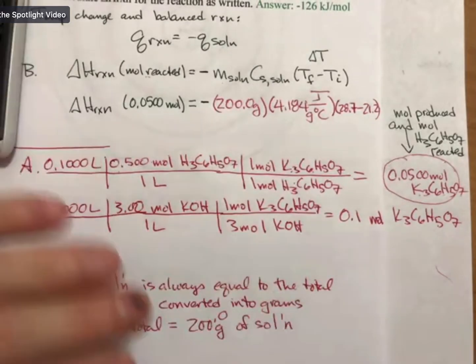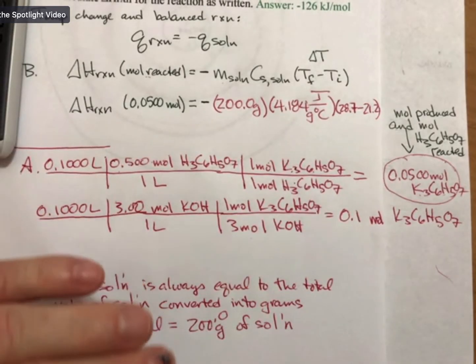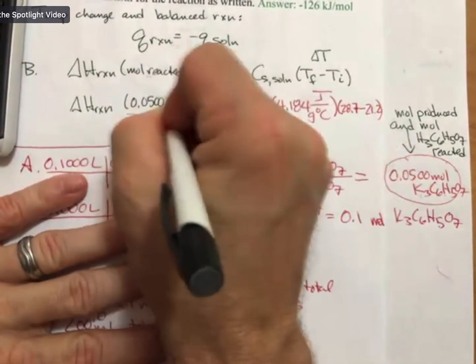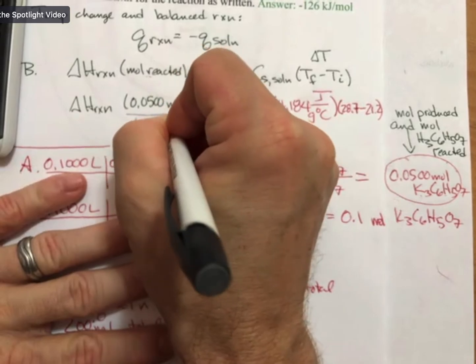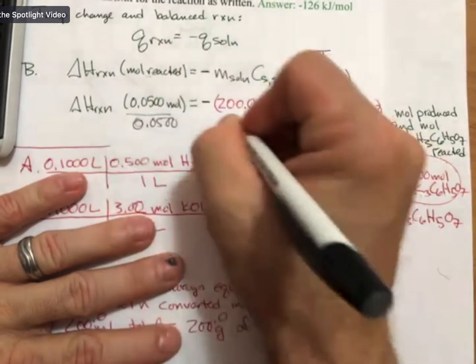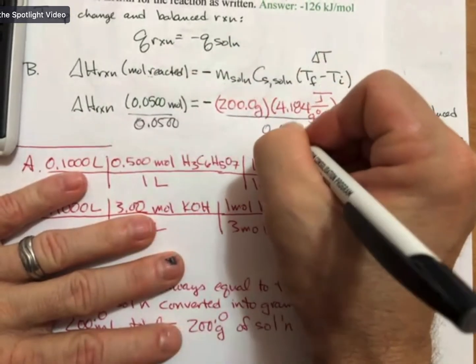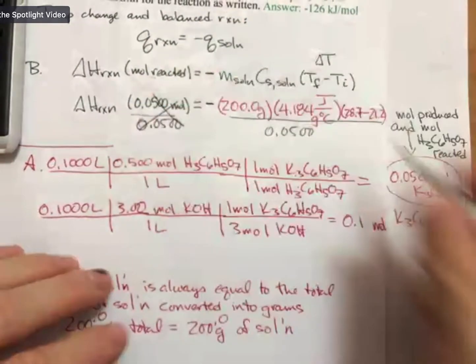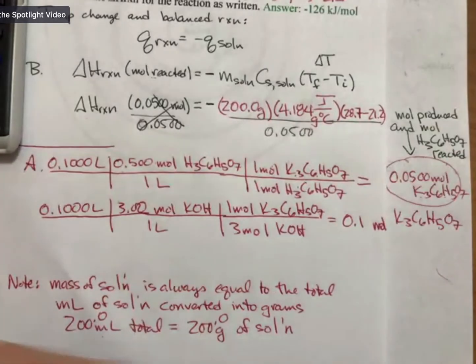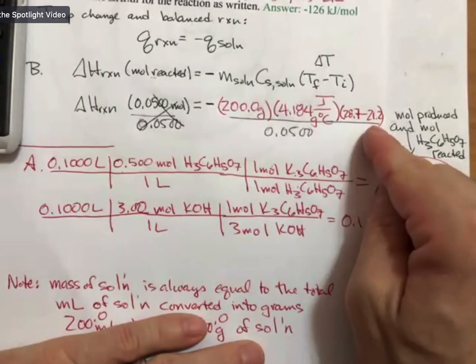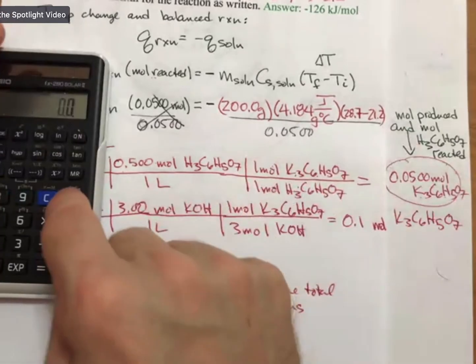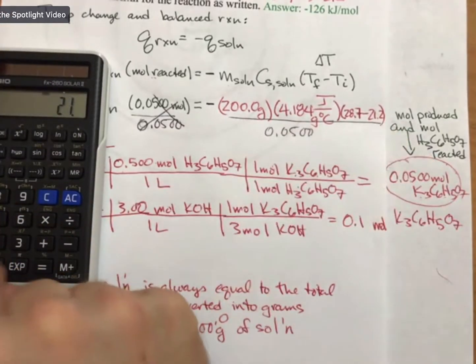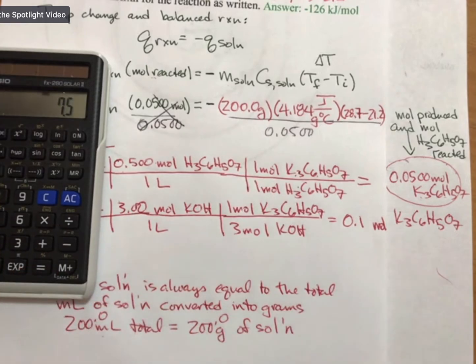So to solve this for delta H, I'm just going to divide both sides by 0.05. And then, now I'll do my math. I do the subtraction first, so 28.7 minus 21.2, and I get 7.5 degrees.